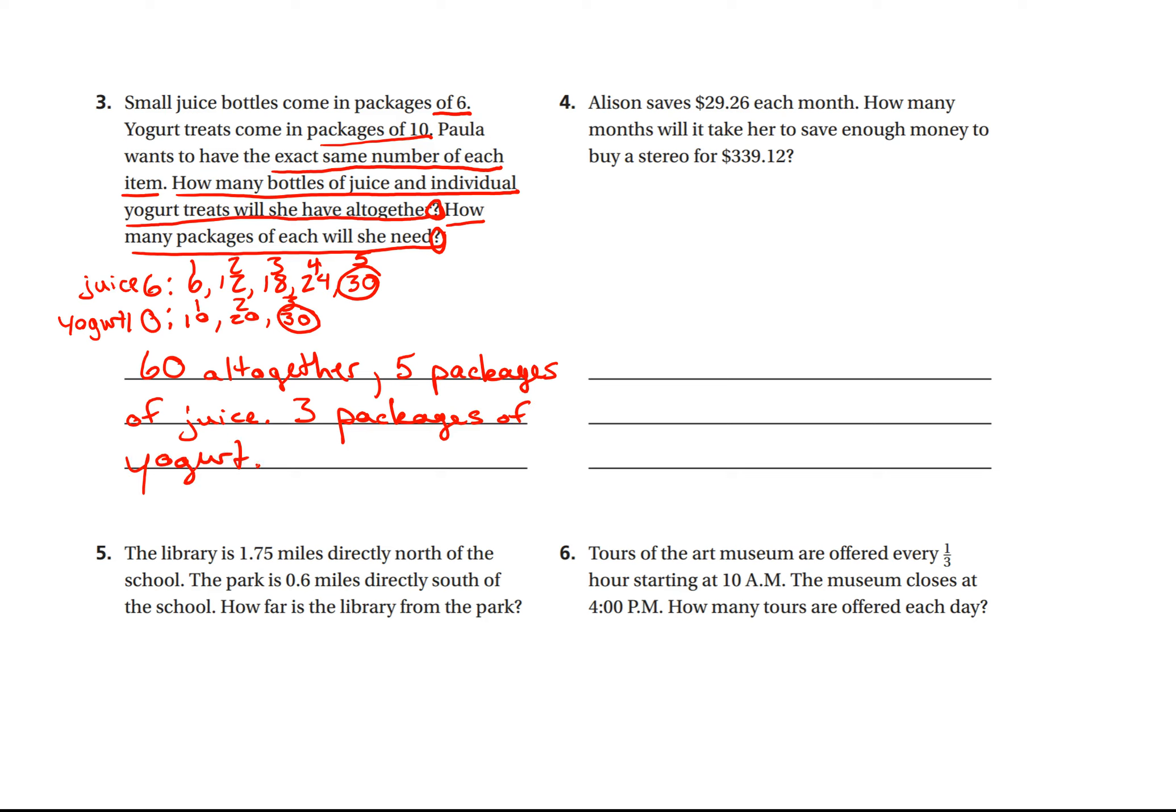All right, let's go on to number four. Allison saves $29.26 each month. How many months will it take her to save enough money to buy a stereo for $339.12? So this is a division problem, $29.26 per month. She needs to save a total of $339.12. So we need to divide those two numbers.